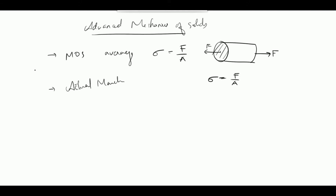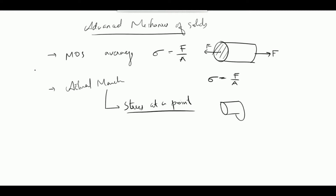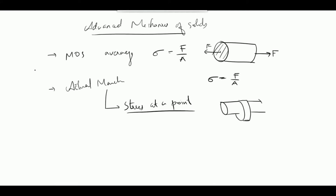The force is dynamic — it varies with time. The stress at a point varies accordingly. For machine components, for example a camshaft, the force varies with time and magnitude. In that case, for analysis and design, we have to account for this varying force.